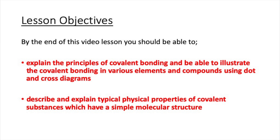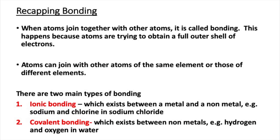First of all, let's recap what we mean by the term bonding. Bonding is where atoms join with other atoms, and they do this to get a full outer shell of electrons, which is a very stable electron arrangement. Atoms can join with other atoms of the same element or different elements. There are two main types of bonding: ionic bonding, which exists between a metal and non-metal, and covalent bonding, which exists between non-metals.